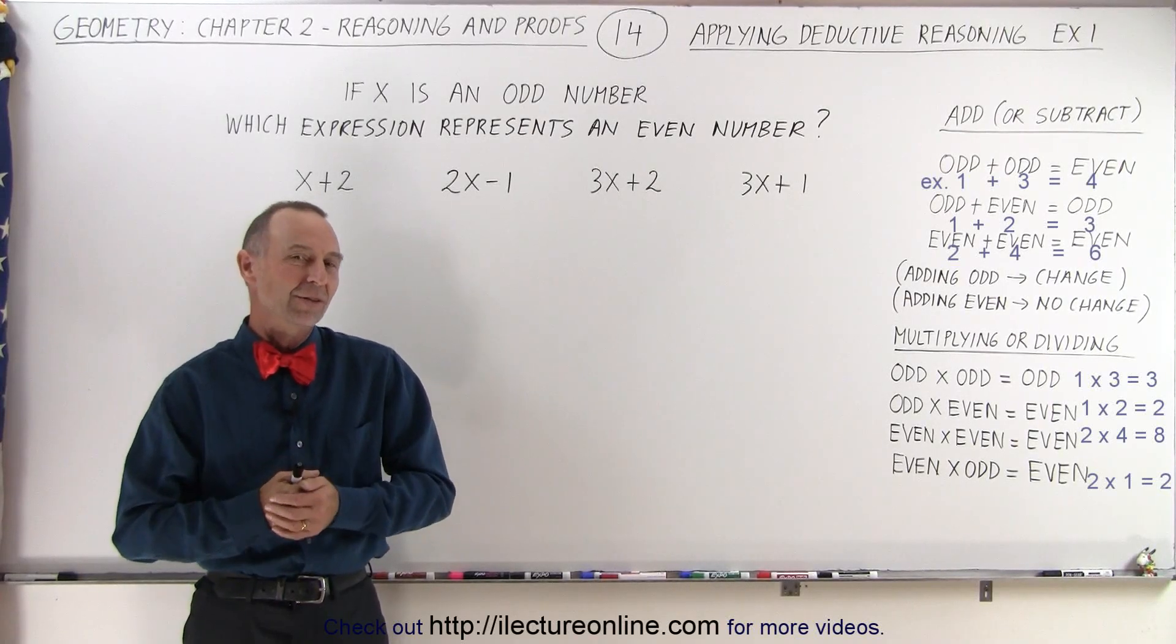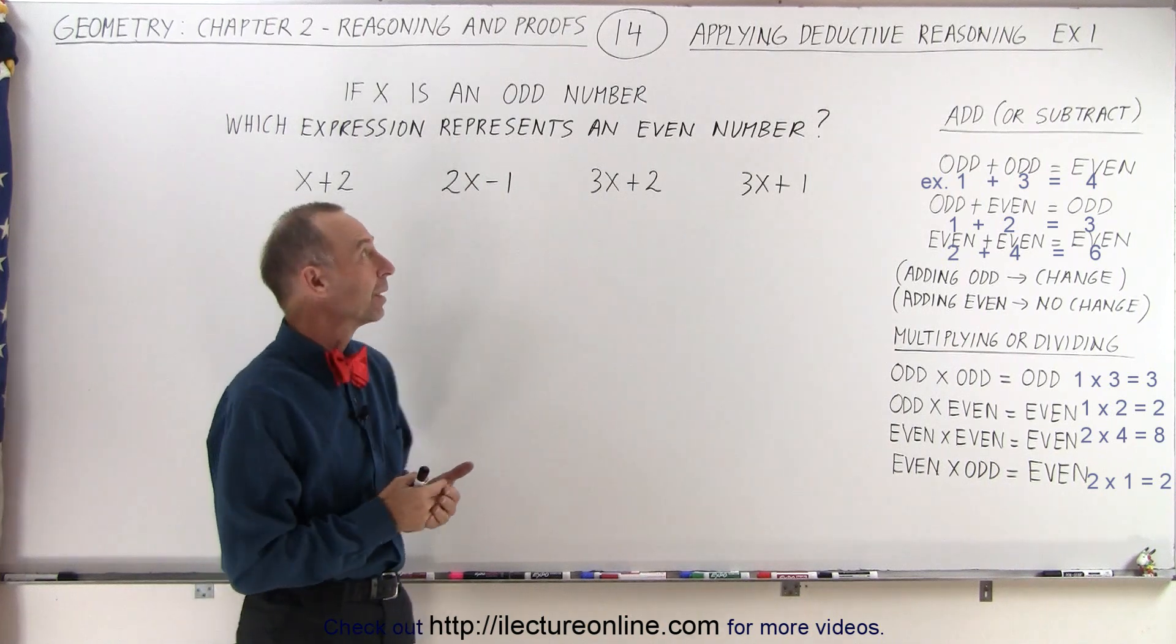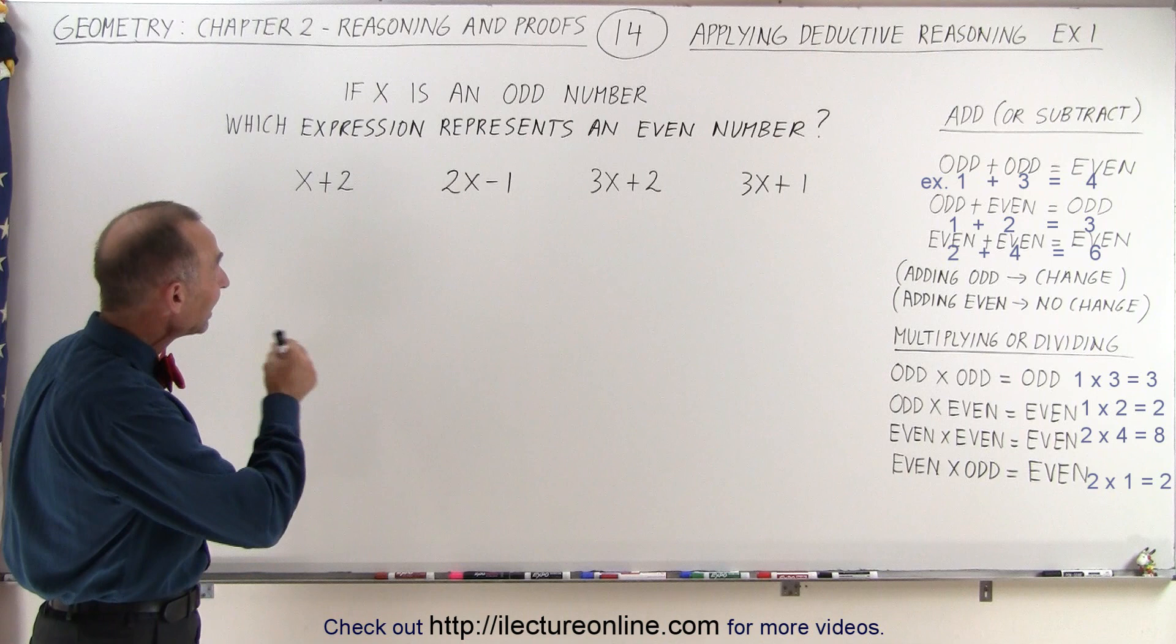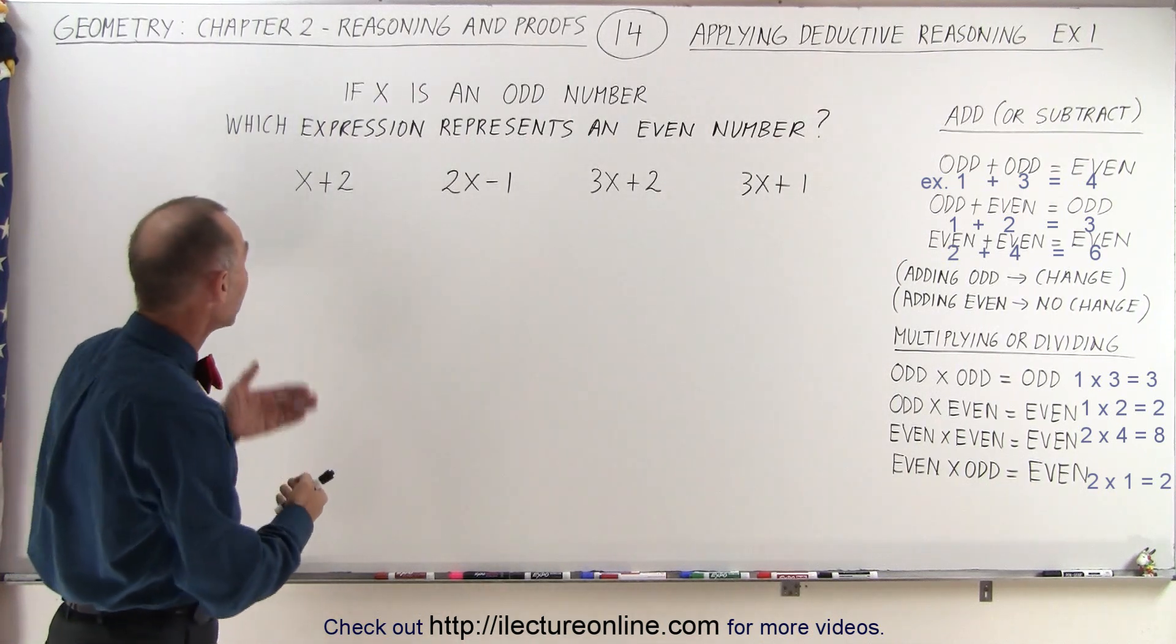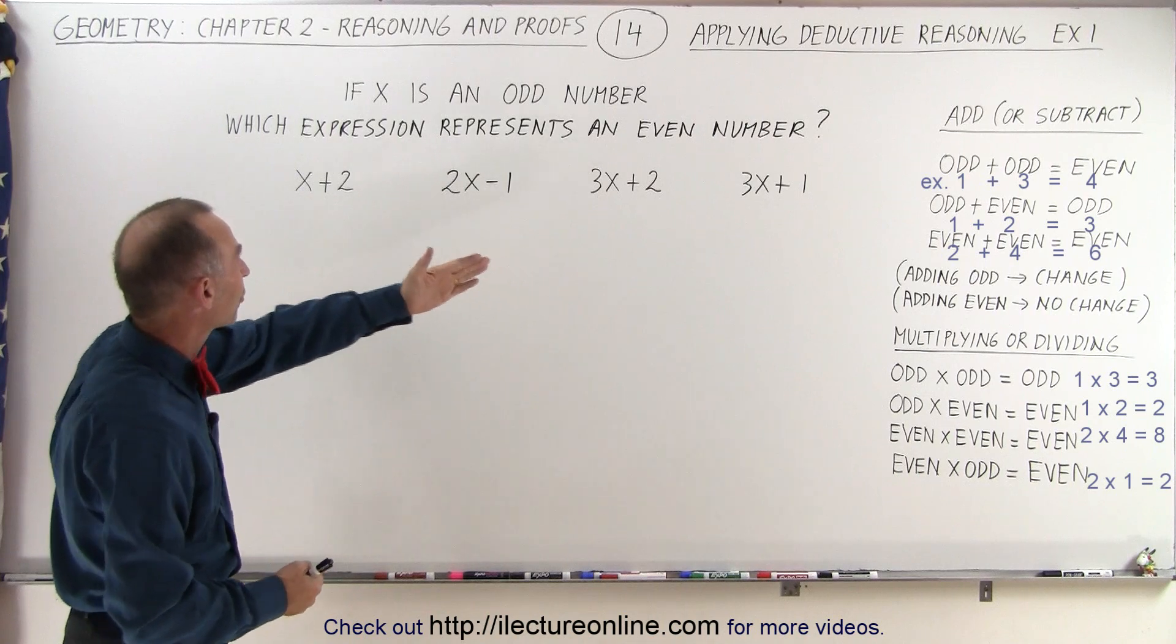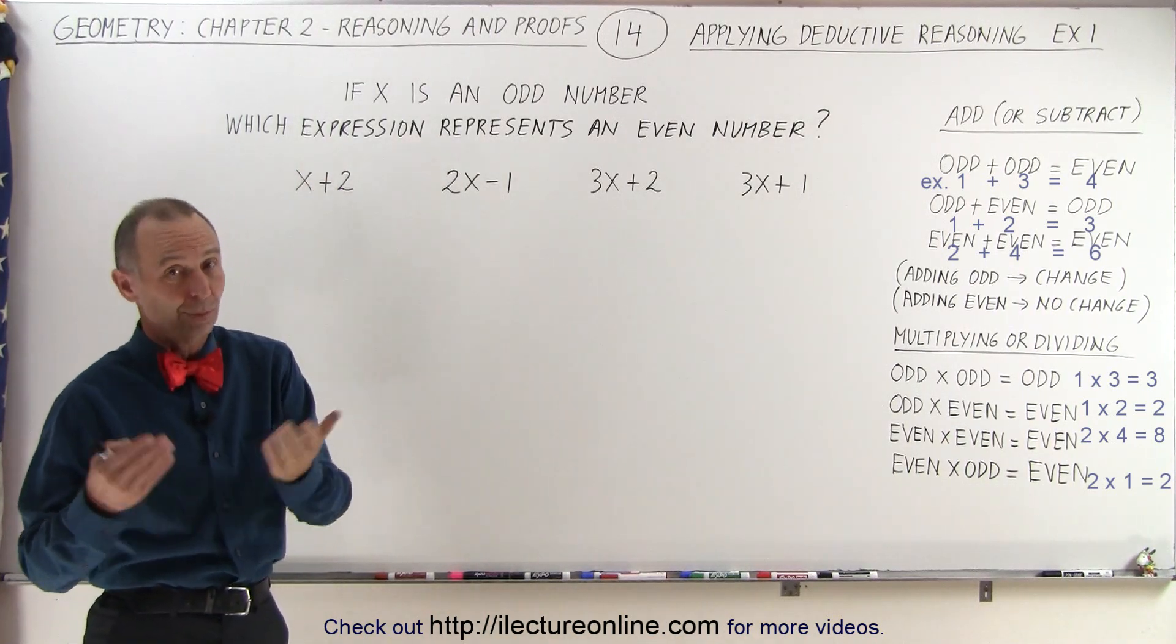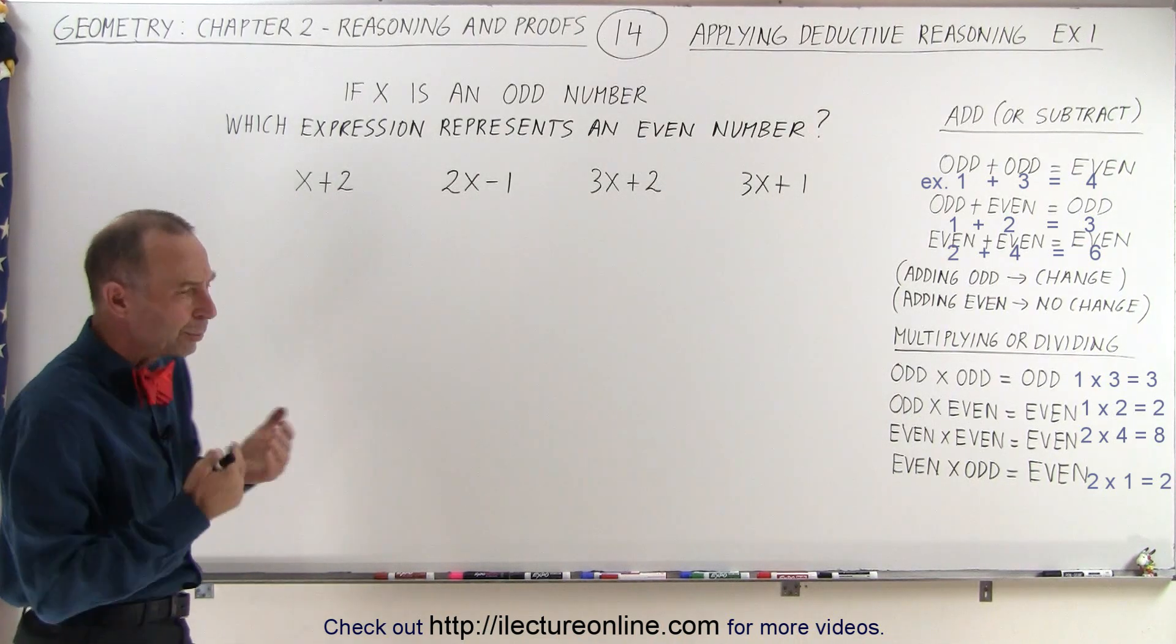Welcome to our Lecture Online. Here's our first example of how to apply deductive reasoning. We've been given the statement that x is an odd number, and then they're asking us to explain which of these four expressions represents an even number. I guess we can also determine which ones express an odd number as well. So how do we do that?